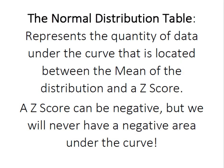The normal distribution table represents the quantity of data under the curve that is located between the mean of the distribution and a calculated z-score. Although z-scores can be negative, we'll never have a negative area under the curve because these areas represent not only area, they also represent the probability of finding a value of x located in that portion of the curve.